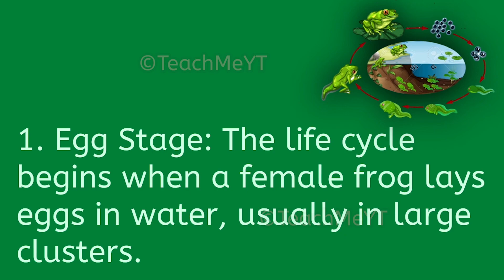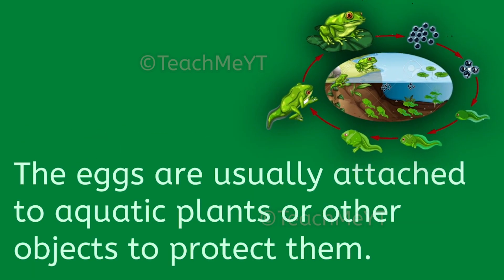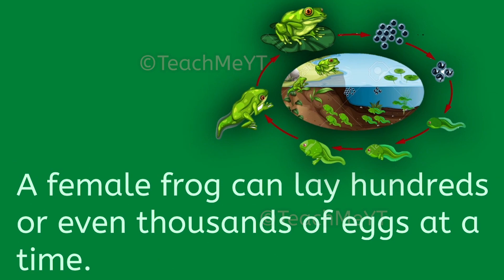Number 1: Egg stage. The life cycle begins when a female frog lays eggs in water, usually in large clusters. The eggs are usually attached to aquatic plants or other objects to protect them. A female frog can lay hundreds or even thousands of eggs at a time.